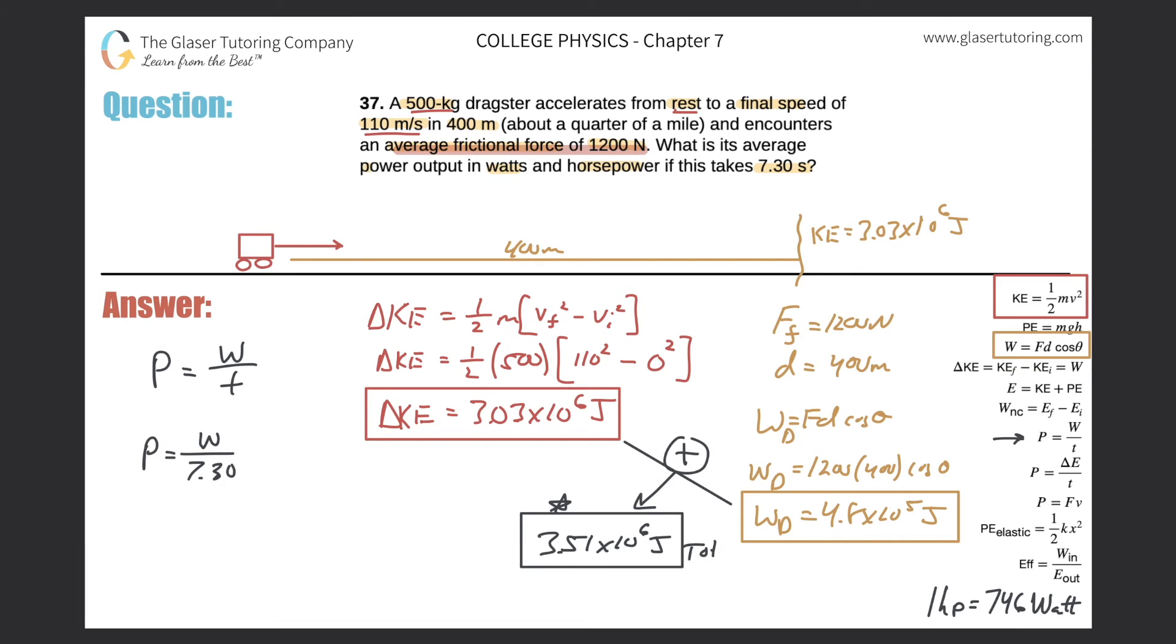This is now the total work done by the dragster. So now we can take this value and plug that in for the work there to find the total power produced by the dragster. So this is 3.51 times 10 to the sixth, all divided by 7.30, since it took that amount of time to produce that amount of work.